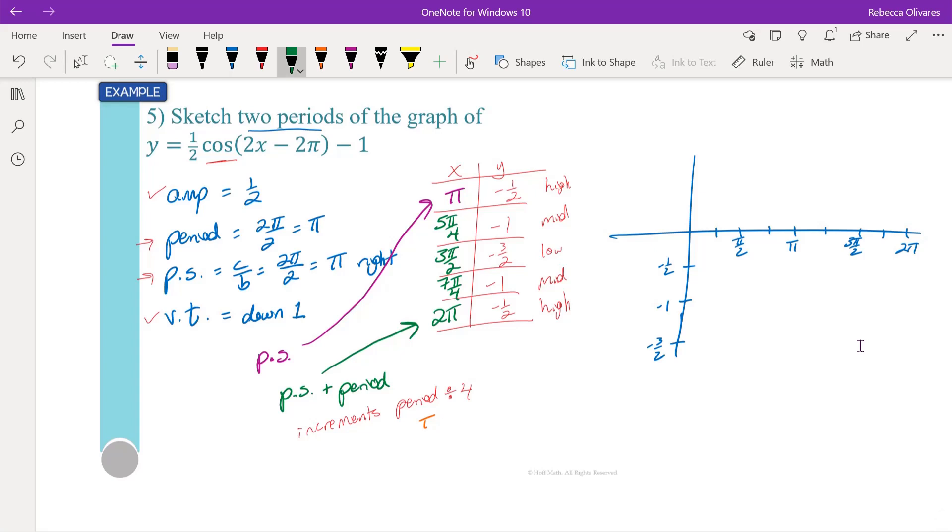So now we start plotting points. At π I'm at negative 1/2. And then at 5π/4 I'm down to negative 1. 3π/2, negative 3/2. 7π/4, back to negative 1.